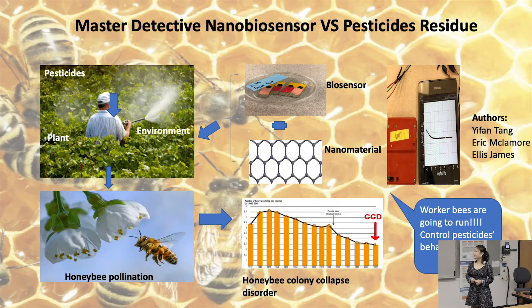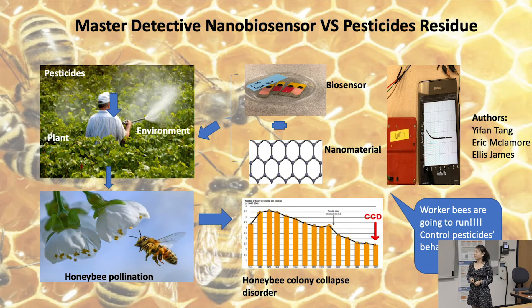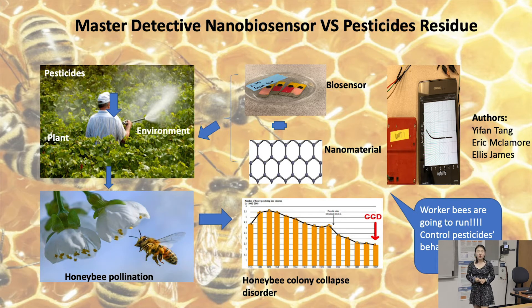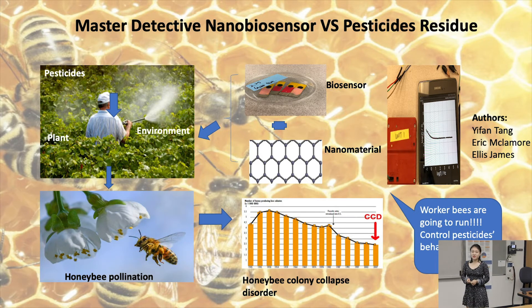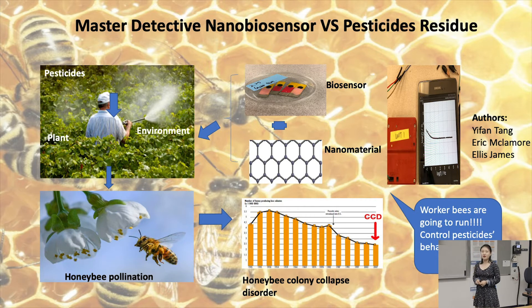Good afternoon everyone. Today I'm gonna give a brief presentation about my master project. The honeybee is the most important pollinator in the whole world. About 18% of plants depend on honeybees to be pollinated and reproduced.